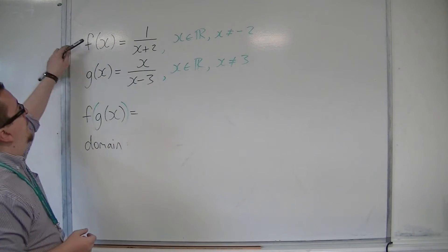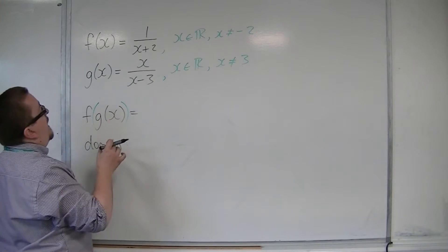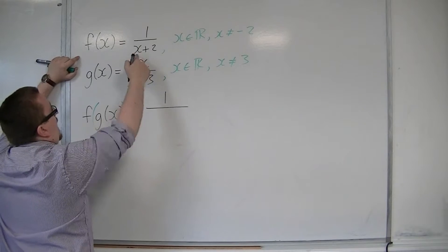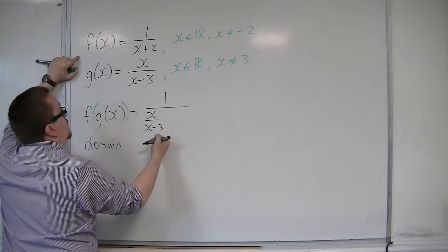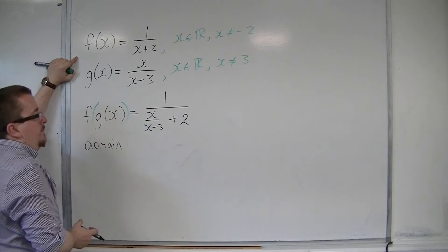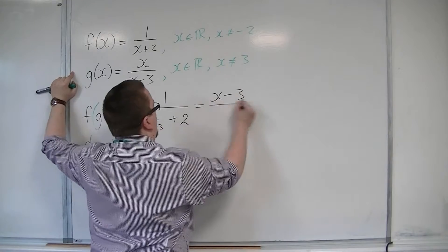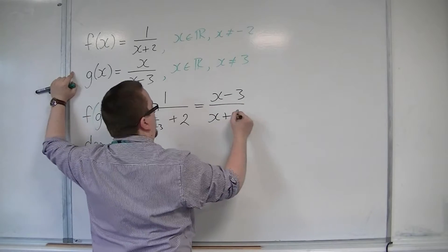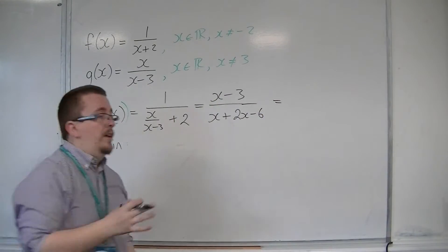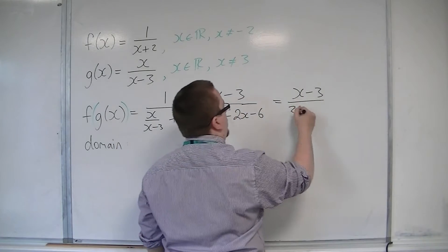Let's see what happens to f of x algebraically when g of x is going into f. So I have 1 over x over x minus 3, plus 2 — that replaces the x that's there. Now I'm going to multiply everything by x minus 3, top and bottom, and I get x minus 3 over x plus 2 lots of x minus 3, so 2x minus 6. That simplifies to x minus 3 over 3x minus 6.